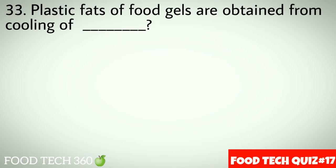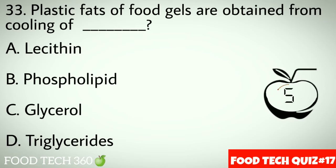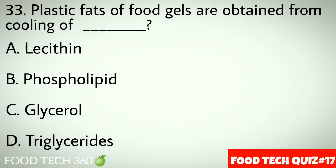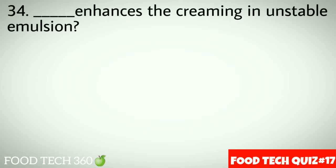Question number 33: Plastic fats and food gels are obtained from cooling of dash. Options: A. Lecithin, B. Phospholipid, C. Glycerol, D. Triglycerides.